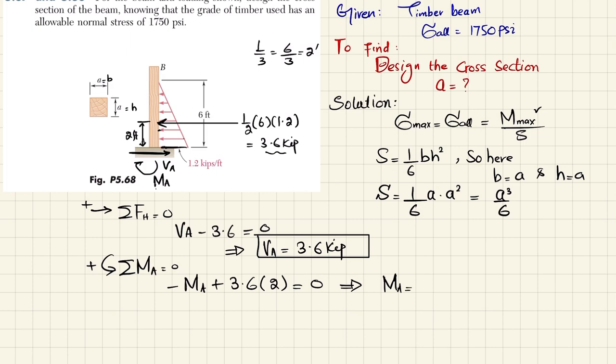maximum moment, is equal to 7.2 kips-feet. Now this moment about point A is the maximum moment, and in inches it will be 7.2 into 12, so 12, and the unit will be kips into